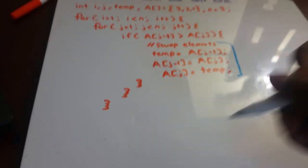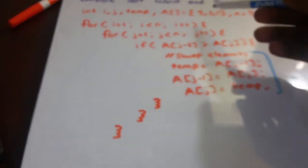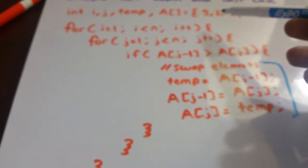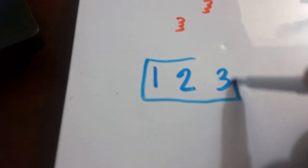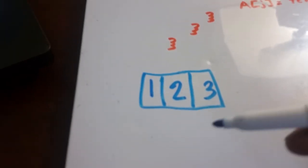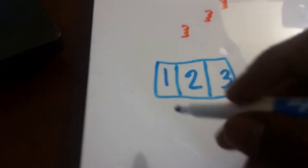Now let's take a look at the best case. The best case scenario is if we already have a sorted array. So instead of three, two, one, we now have one, two, three. Let's run through the algorithm. First, we compare the first two elements: is one greater than two? It's not, so no swapping needed. Then we compare the next two elements: is two greater than three? It's not, so no swapping needed, and we're done with the inner loop.